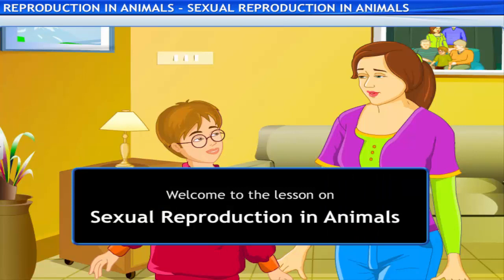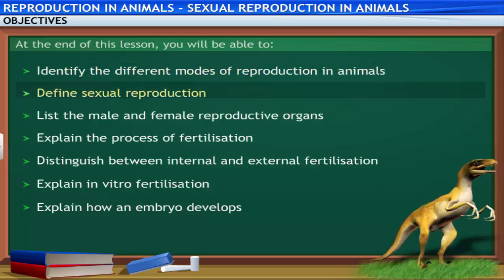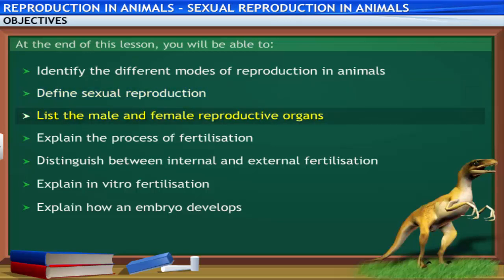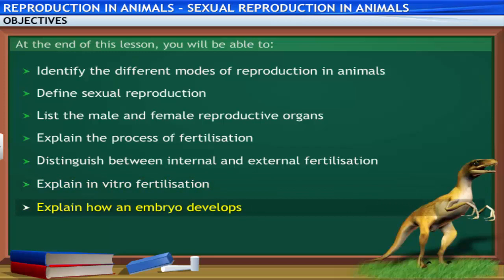Welcome to the lesson on sexual reproduction in animals. At the end of this lesson, you will be able to identify the different modes of reproduction in animals, define sexual reproduction, list the male and female reproductive organs, explain the process of fertilization, distinguish between internal and external fertilization, explain in vitro fertilization, and explain how an embryo develops.